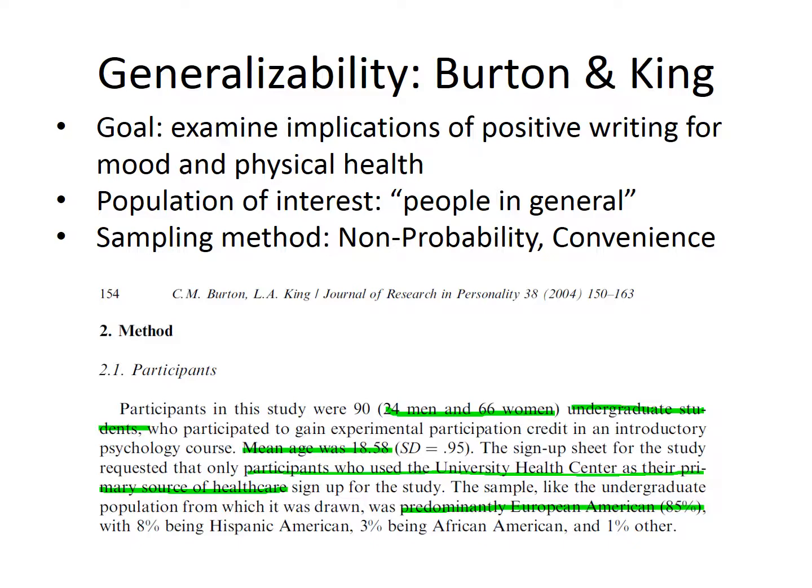That said, we're interested in whether the sampling method and resulting sample would lead to results that seem to represent the entire population. It helps to remember what the authors are interested in. Looking across the information we already have in the worksheet, we know Burton and King were interested in how writing about intensely positive experiences impacted mood and health, and appeared to be considering people in general.